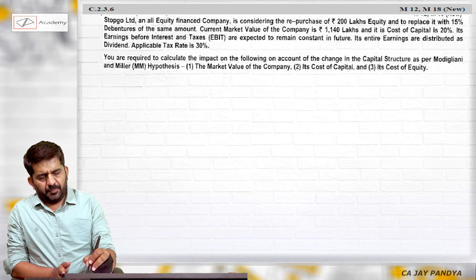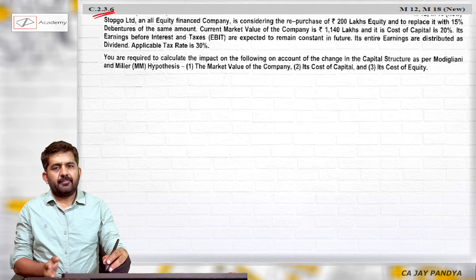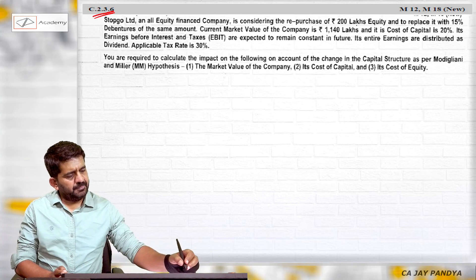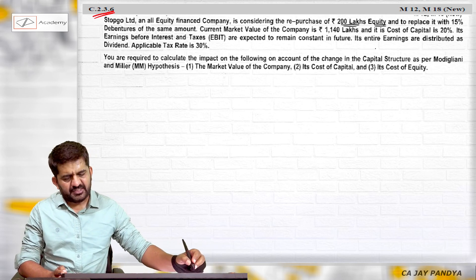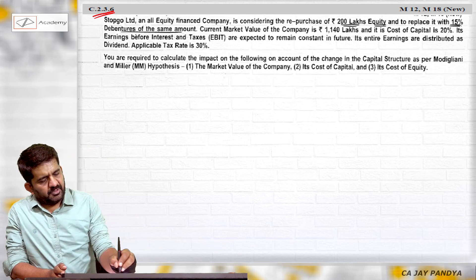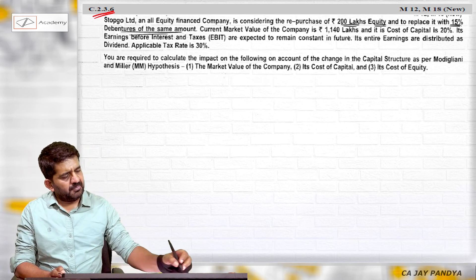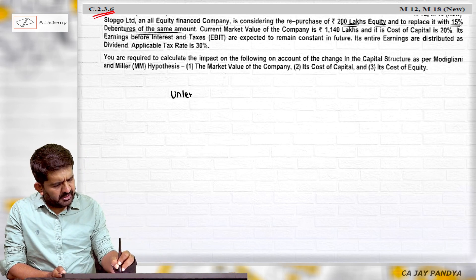Stopgo Limited, an all equity finance company, is considering repurchase of 200 lakhs equity and to replace it with 15 percent debt. So an unlevered company is planning to become a levered company. Current market value of the company, so right now it is unlevered.